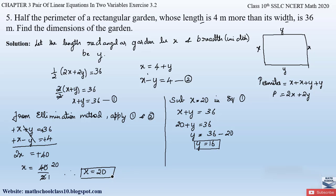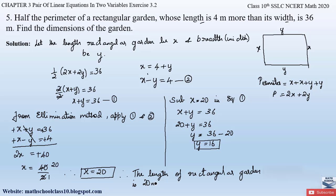We got x, the length of the rectangular garden, as 20 meters, and the breadth or width of the rectangular garden as 16 meters. Therefore, the length of the rectangular garden is 20 meters and the width is 16 meters.